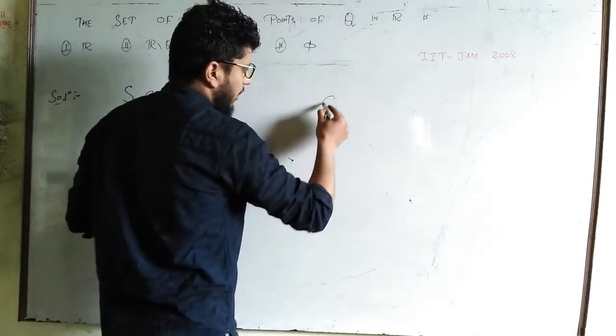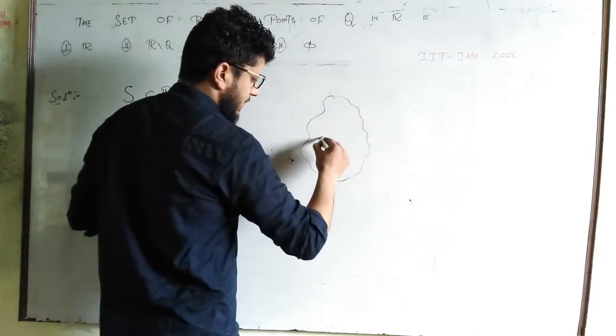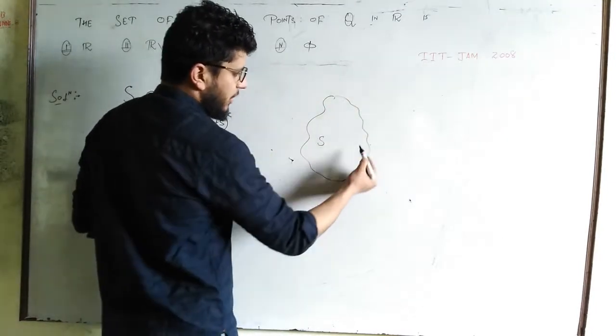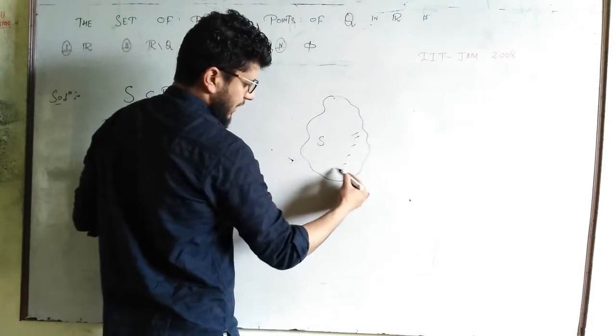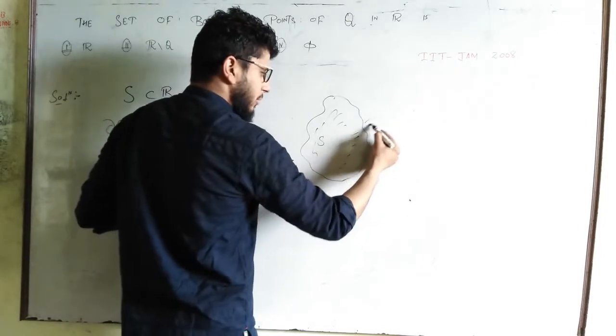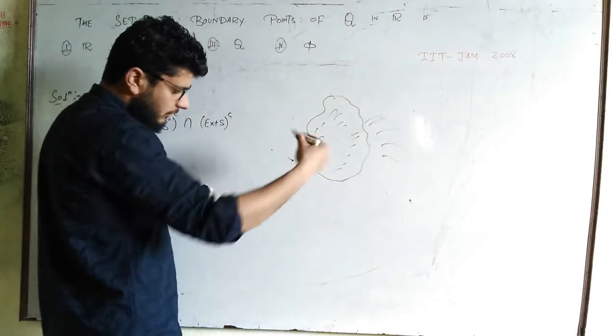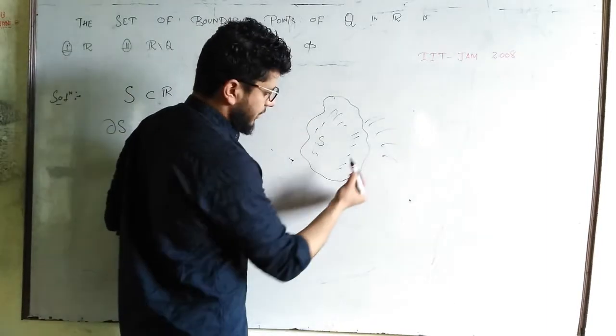I will try to draw an analog here. If, for example, I am given a set, say this is my set S. Now the interior points are inside, and the exterior points are the points which are outside.